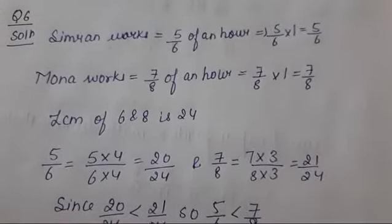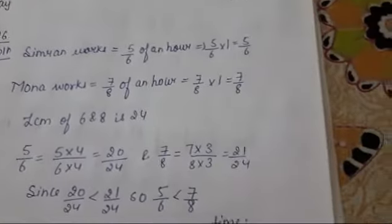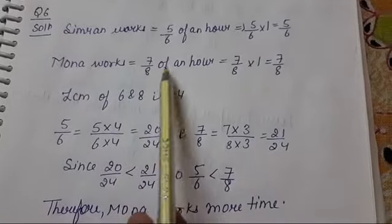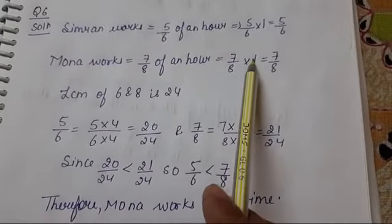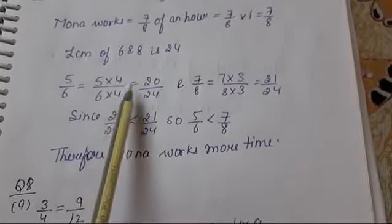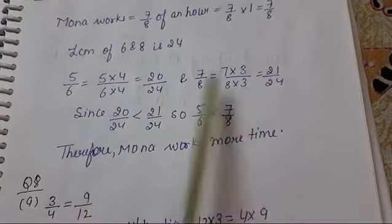Question number 6: Simran works 5 upon 6 of an hour, so 5 upon 6 into 1 equals 5 upon 6. Mona works 7 upon 8 of an hour, so 1 multiply 7 upon 8.